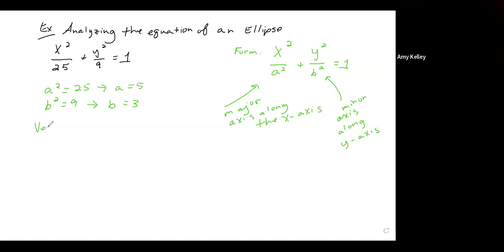In an ellipse, the vertices are given by a, 0 and negative a, 0 when our major axis is along the x-axis. b will give us the points along the minor axis. So what we have so far is this.